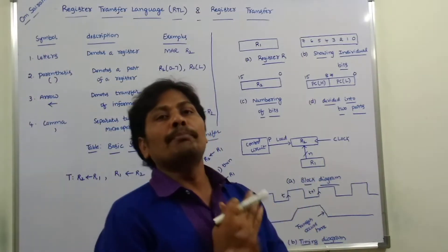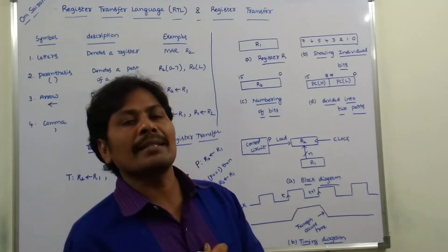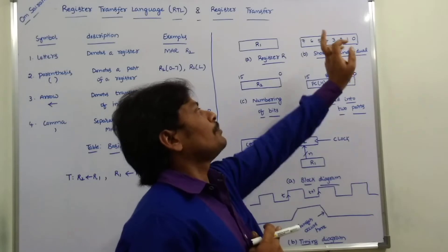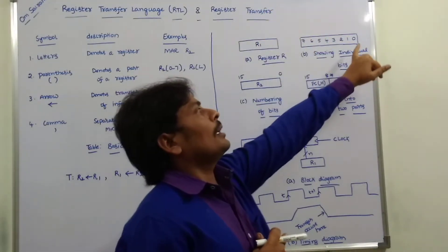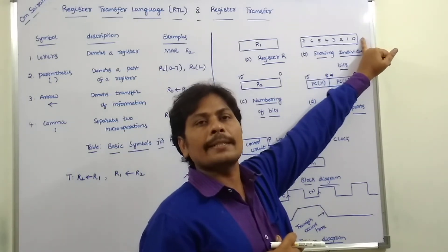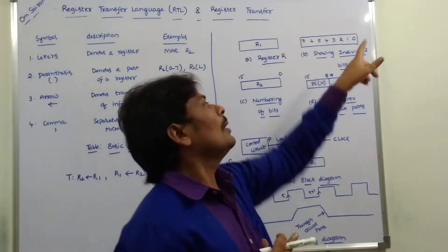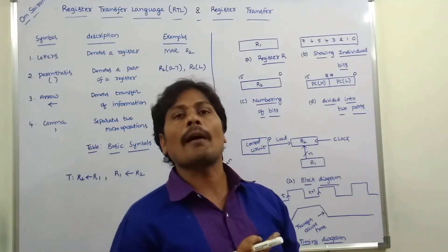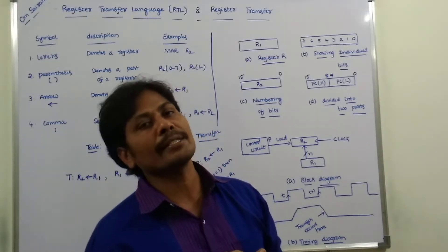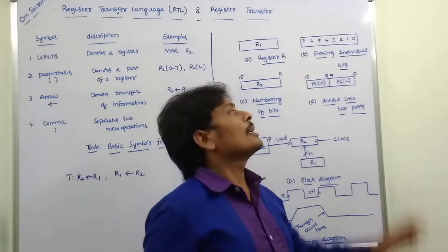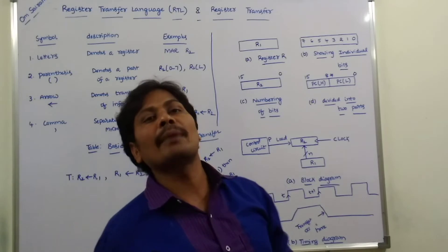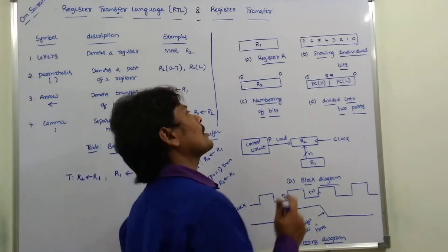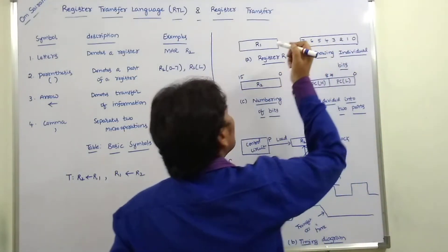The individual bits of the register can be represented as follows. For an 8-bit register, we start the bits from the rightmost to the leftmost. In an 8-bit register, the bits start from 0 and end with n minus 1. Here n equals 8, so starting with 0 and ending with 7. These are the individual bits of a register — we always start from the right side and move to the left side.